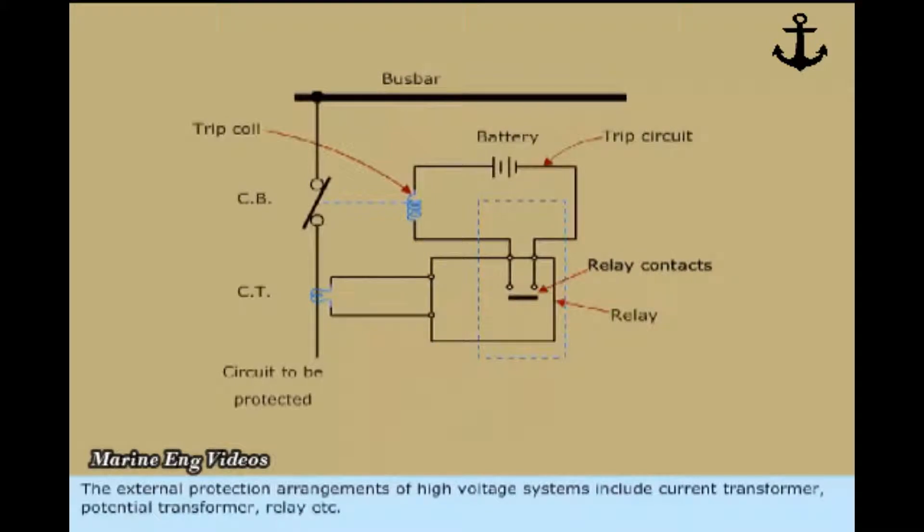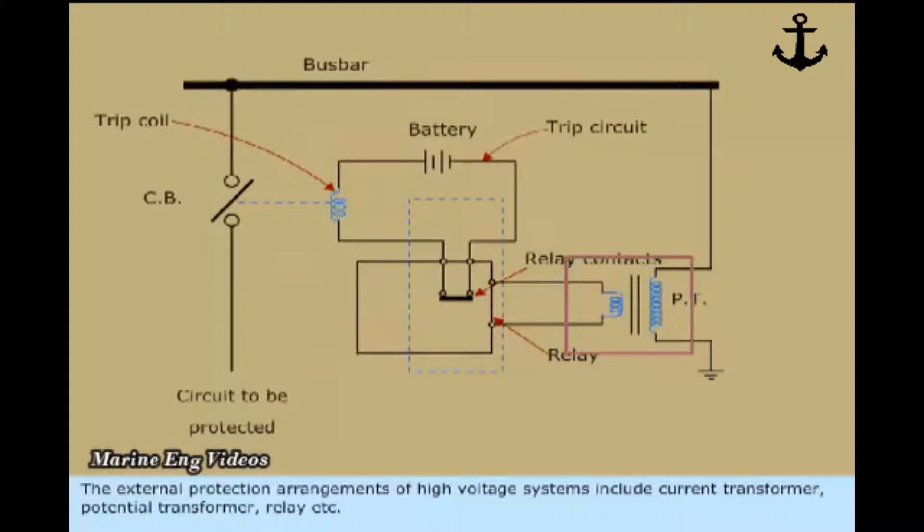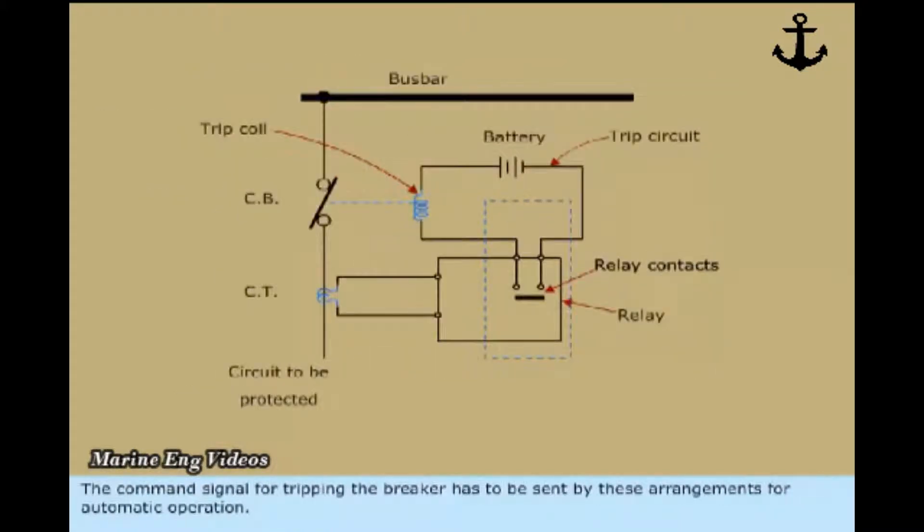The external protection arrangements of high voltage systems include current transformer, potential transformer, relay etc. The command signal for tripping the breaker has to be sent by these arrangements for automatic operation.